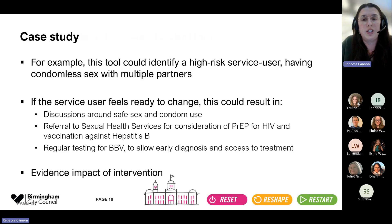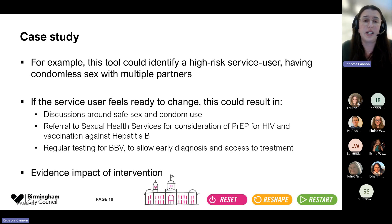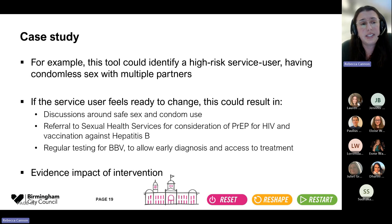A practical example: an organisation meets someone they think is high risk — they're having condomless sex with multiple partners and didn't realise that put them at high risk of HIV, but they feel ready to make a change. They get in touch with local sexual health services, get started on PrEP and condoms, get vaccination against hepatitis B, and begin getting regular testing for BBVs. That's a really good outcome for the health and wellbeing of that person and from a public health perspective — and it evidences the impact of that organisation having that discussion and performing that intervention.